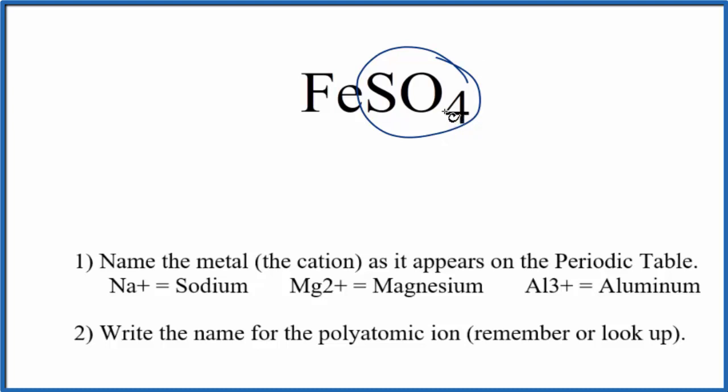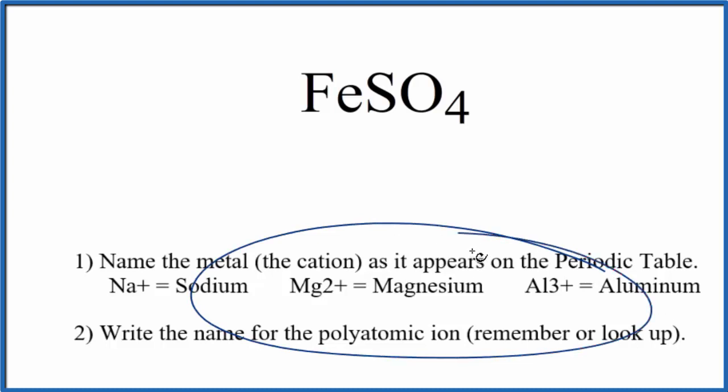So we have this SO4 ion here and then it's bonded to Fe, which is a transition metal. So we have a metal and then this group of nonmetals in the polyatomic ion. It's an ionic compound. We're going to use these rules here to write the name.